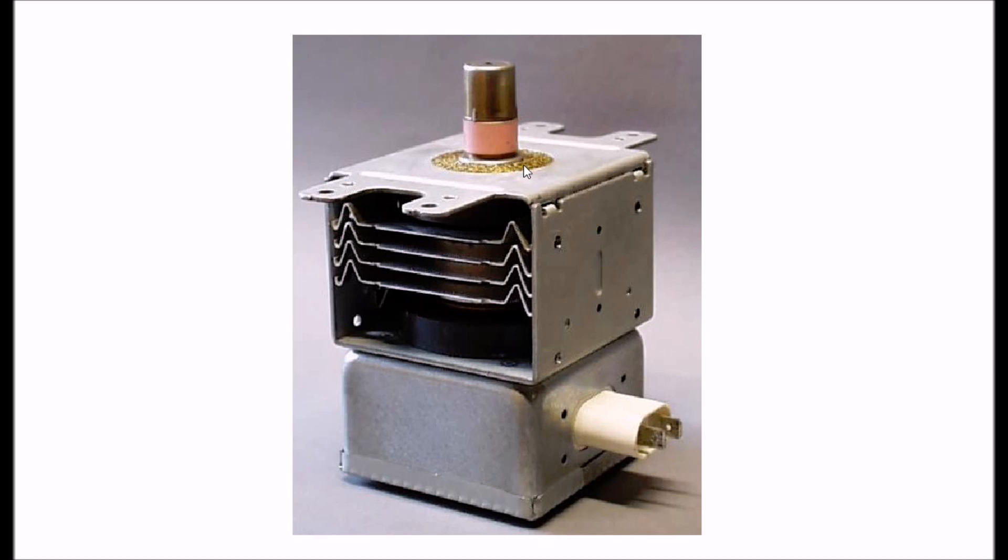The entire case out here is your anode. It is connected to the resonant cavity. That also serves as your anode. These are cooling fins. Your actual tube is buried under these cooling fins. This is where it has basically an antenna, and there's a hole at the top of this metal cylinder. This is where your microwave radiation comes from.